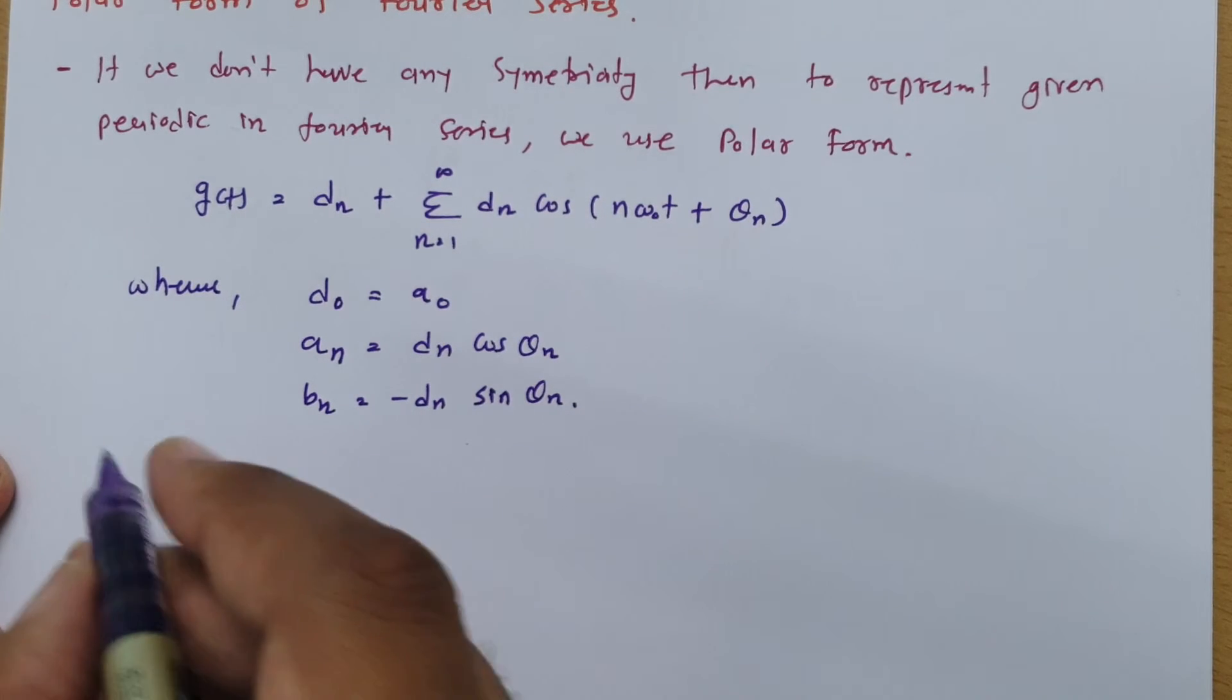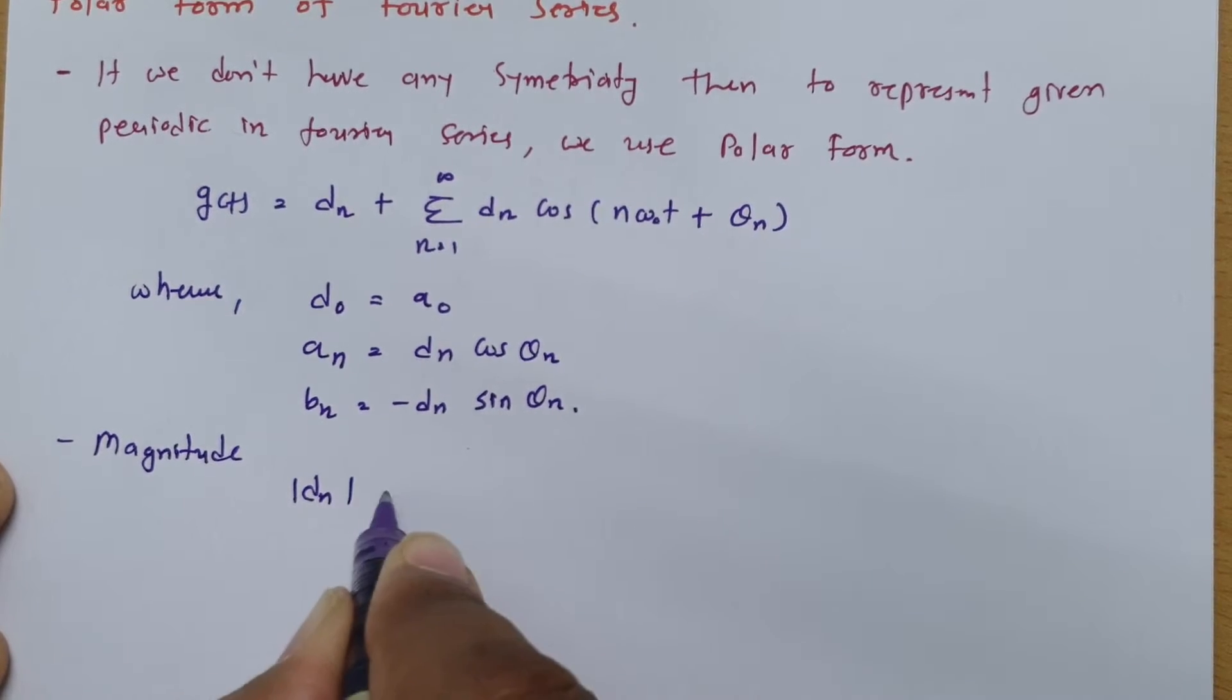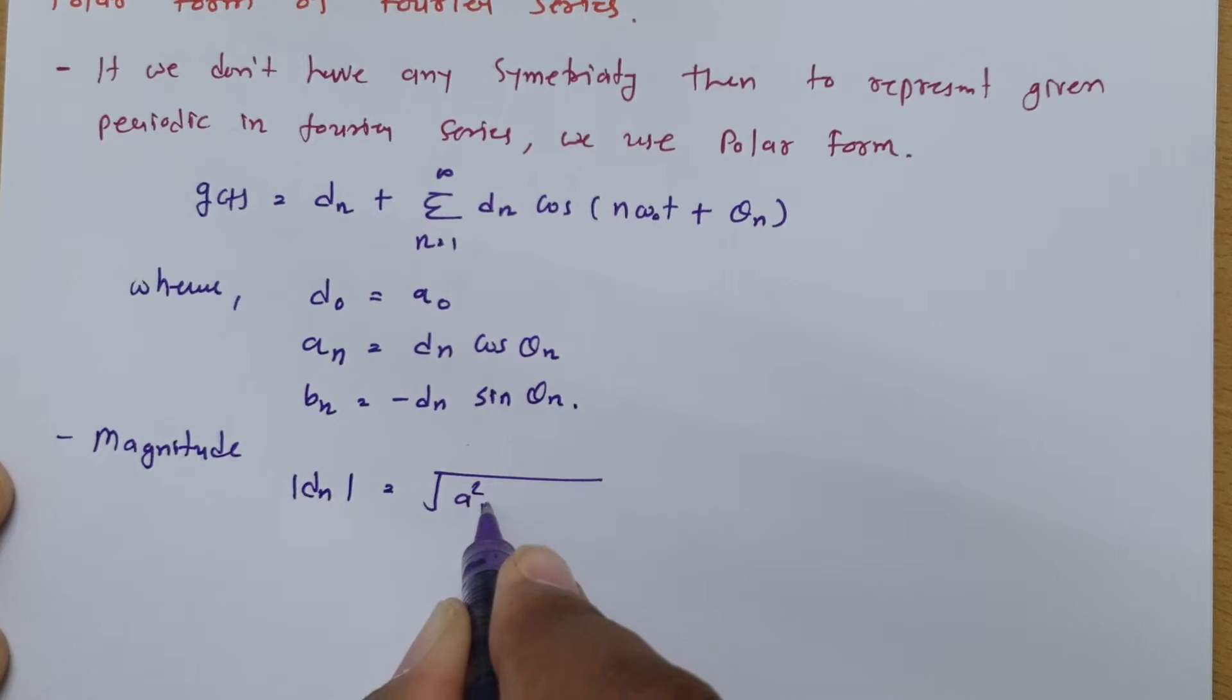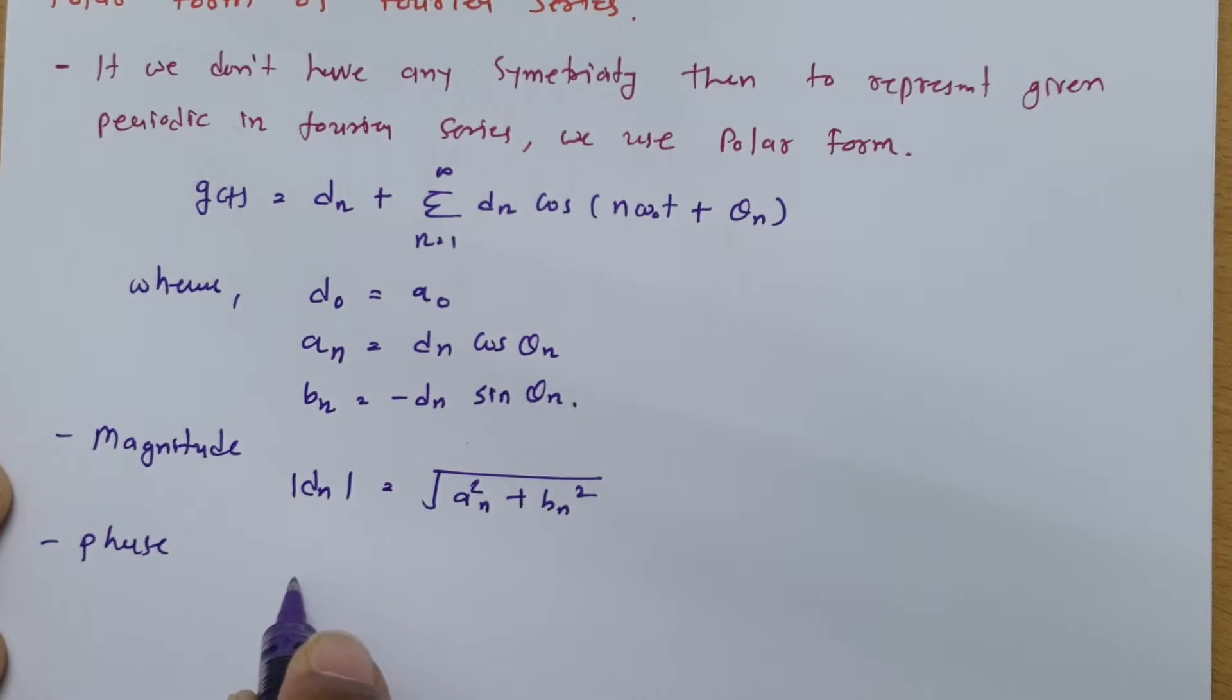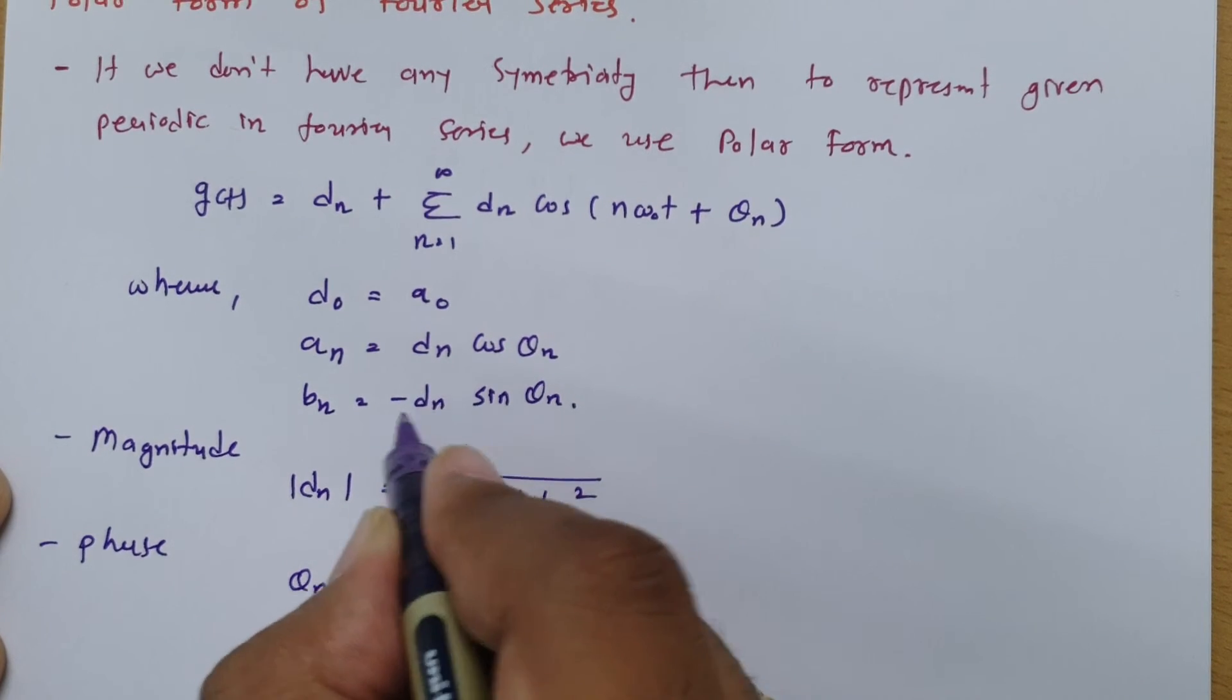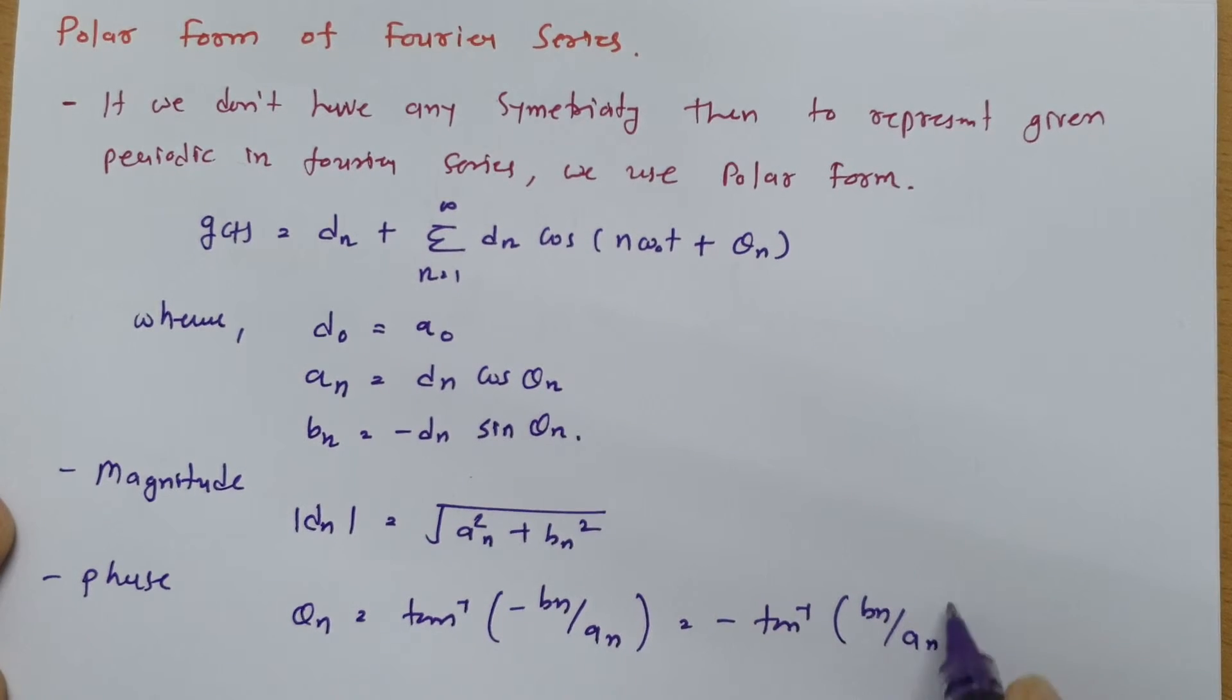So if you want magnitude, magnitude that could be calculated by mode of dn and that mode of dn is square root of an square plus bn square. And phase that one can calculate here that is theta n and that is tan inverse, that is minus tan inverse minus bn divided by an. So that is minus tan inverse bn by an.